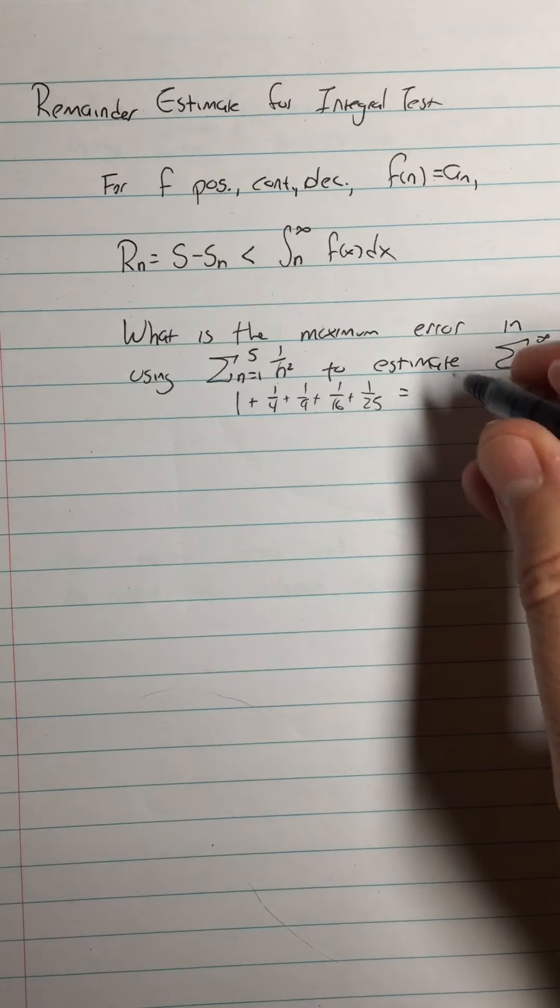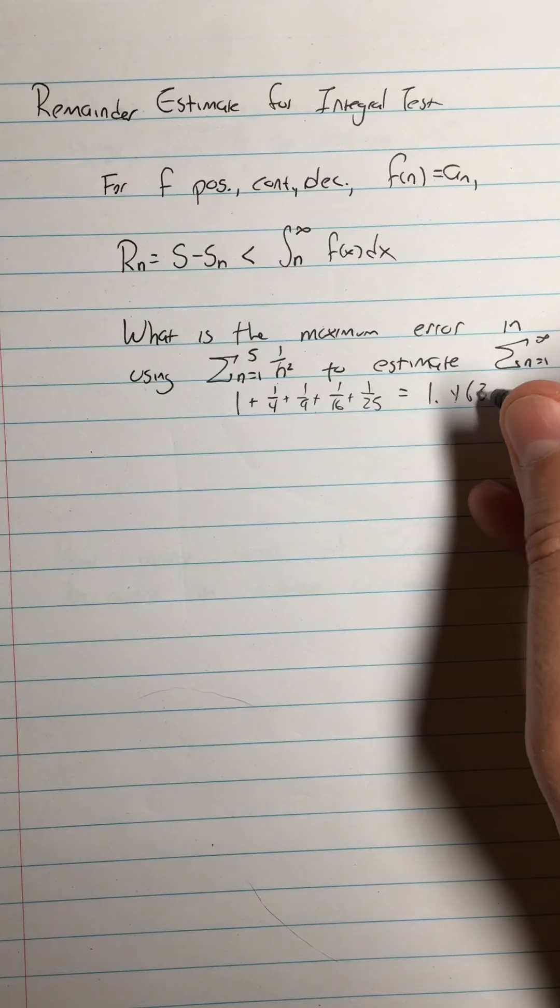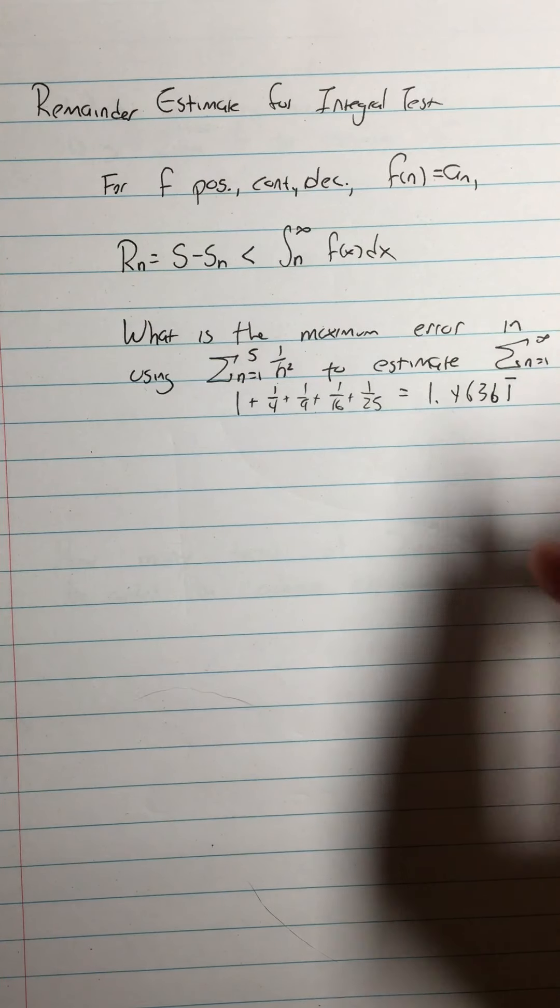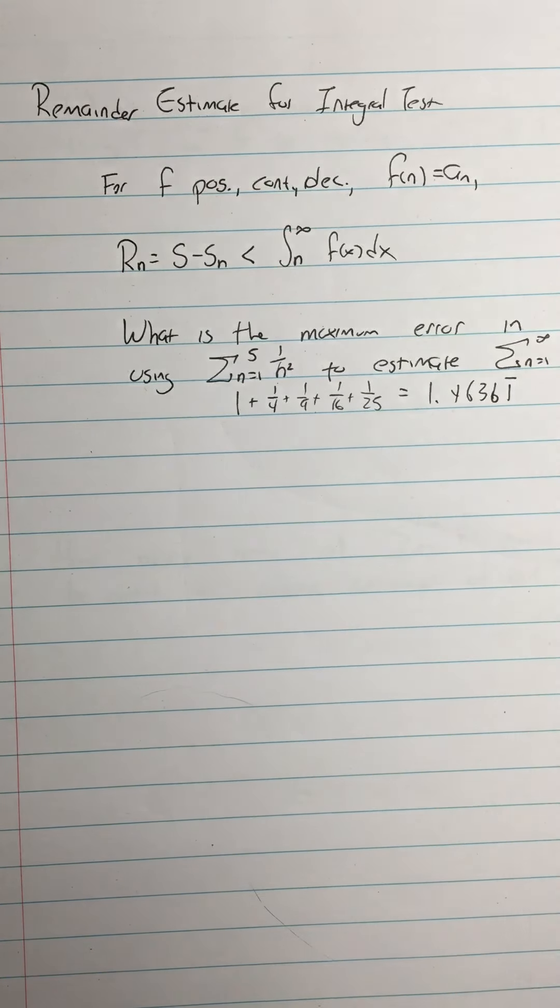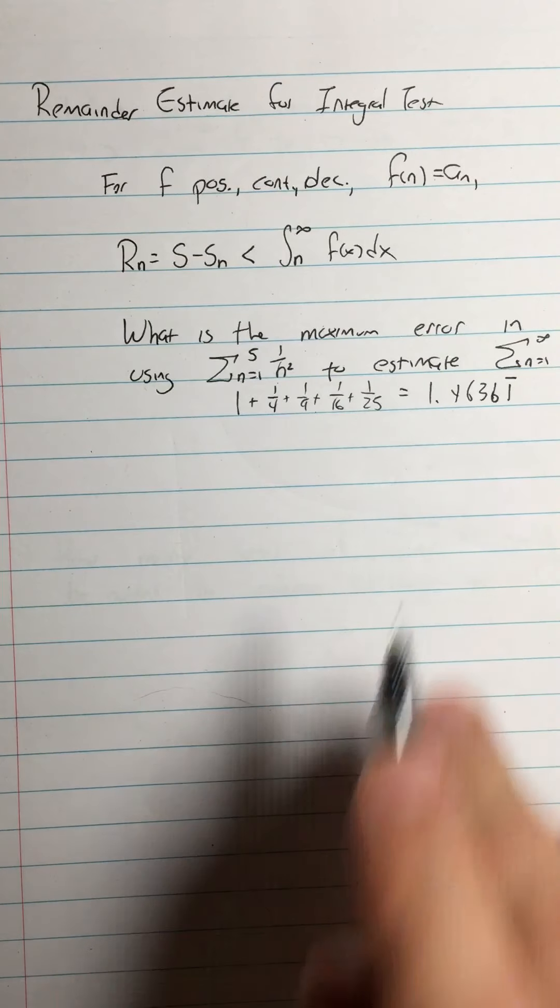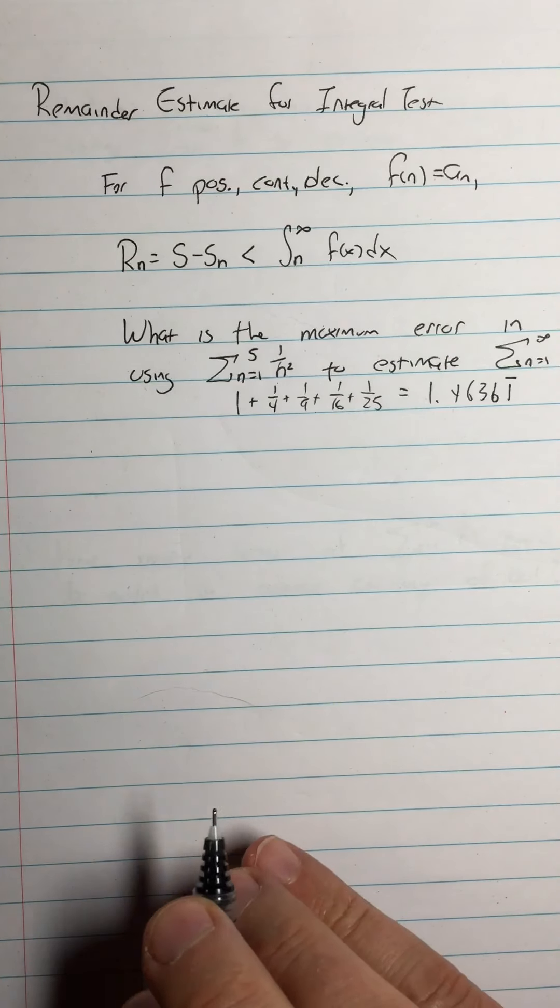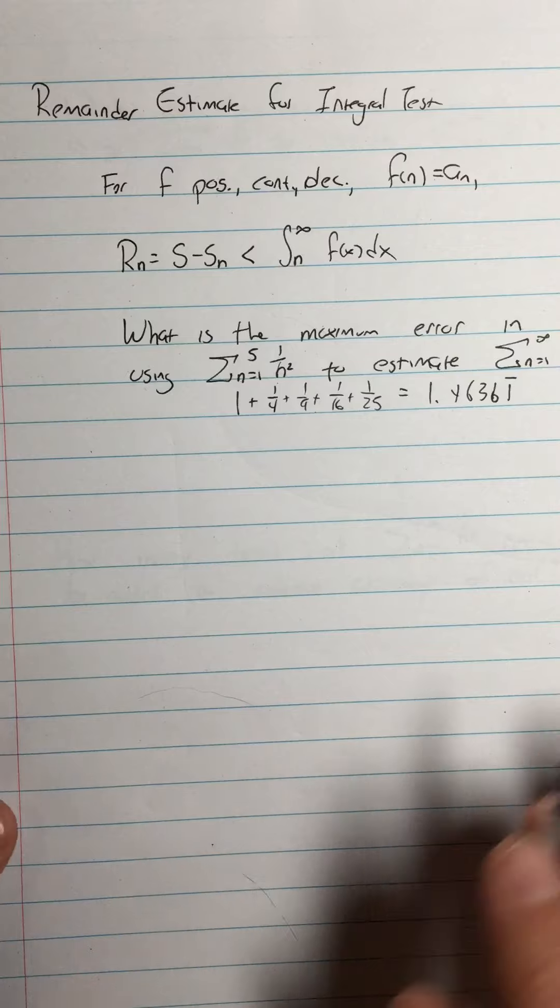1.4636111. And we have a good reason to believe that that's a repeating decimal because we're adding up rational numbers. So this has to be a rational number. Sum of any two rational numbers is also rational.